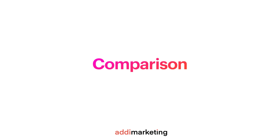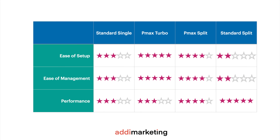Let's compare the four account structures. The structures with Pmax campaigns — numbers two and three — are easier to set up and manage. Standard campaign structures — numbers one and four — are harder to set up and manage, but on the flip side they provide better control and fine-tuning opportunities. You get the best performance with standard split, but it only works for large budgets and a large number of conversions. For most stores, Pmax Turbo or Pmax Split will be the best options, but you need to keep experimenting and trying different campaign structures.